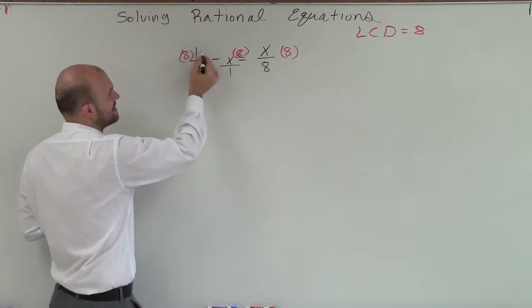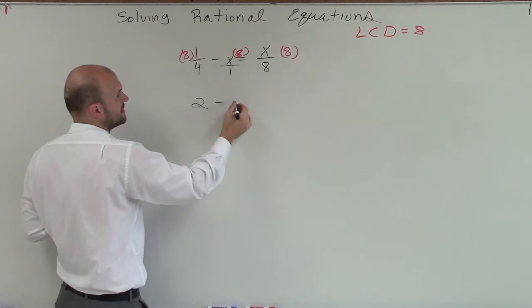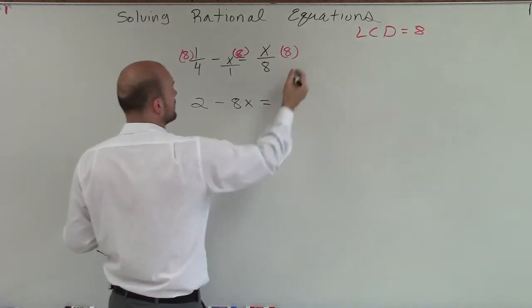So over here, I have 8 times 1 divided by 4. Well, that's just going to leave me with 2. 8 times x over 1, that's just going to leave me with 8x. And that equals x.